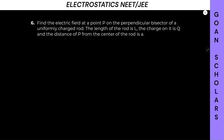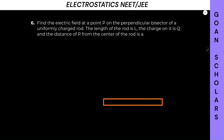Let's imagine a rod. So this is our rod over here. Perpendicular bisector means it is perpendicular and splitting the rod into two equal parts. At any point P we are looking for the electric field, and this is at a distance of A. The rod is of length L.